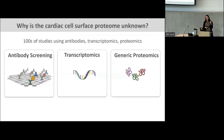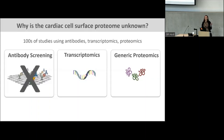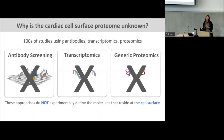The other technical challenge is that despite hundreds of studies using antibodies, transcriptomics, and proteomics to study molecules in the heart, these approaches aren't good enough. Antibody screening: there just aren't enough antibodies that are really specific to cover all of the proteins that sit at the cell surface. Transcriptomics is great for measuring mRNA, but it doesn't tell you anything about protein abundance or where that protein sits. Generic proteomics will just tell you about protein abundance but doesn't tell you where the proteins localize. Altogether, these traditional approaches don't define the molecules that sit at the surface of the cell.